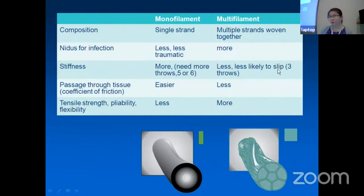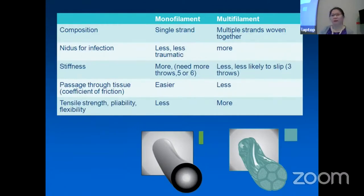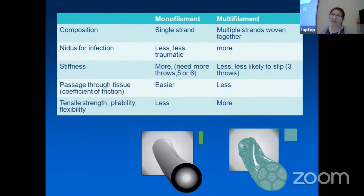When placing suture knots, multifilament requires fewer throws and monofilament may need more. Monofilament passes through tissue more easily because of less friction from its single strand. Multifilament is a bit more difficult to pass through tissue, but because so many strands are woven together, its tensile strength, pliability, and flexibility are greater than monofilament sutures.